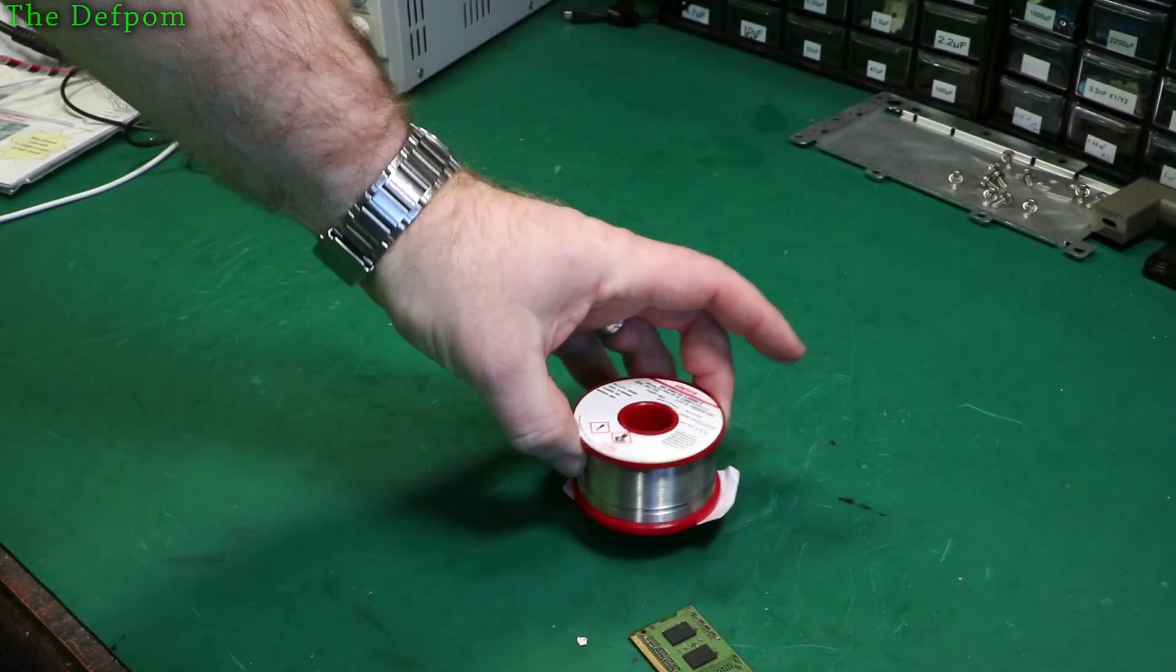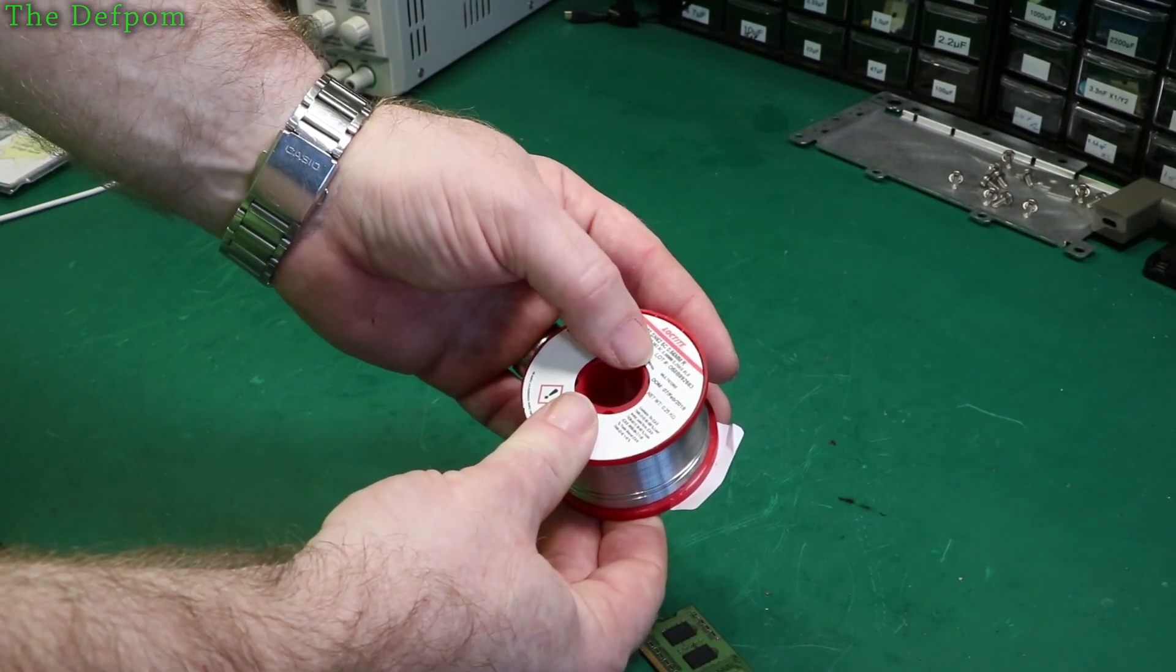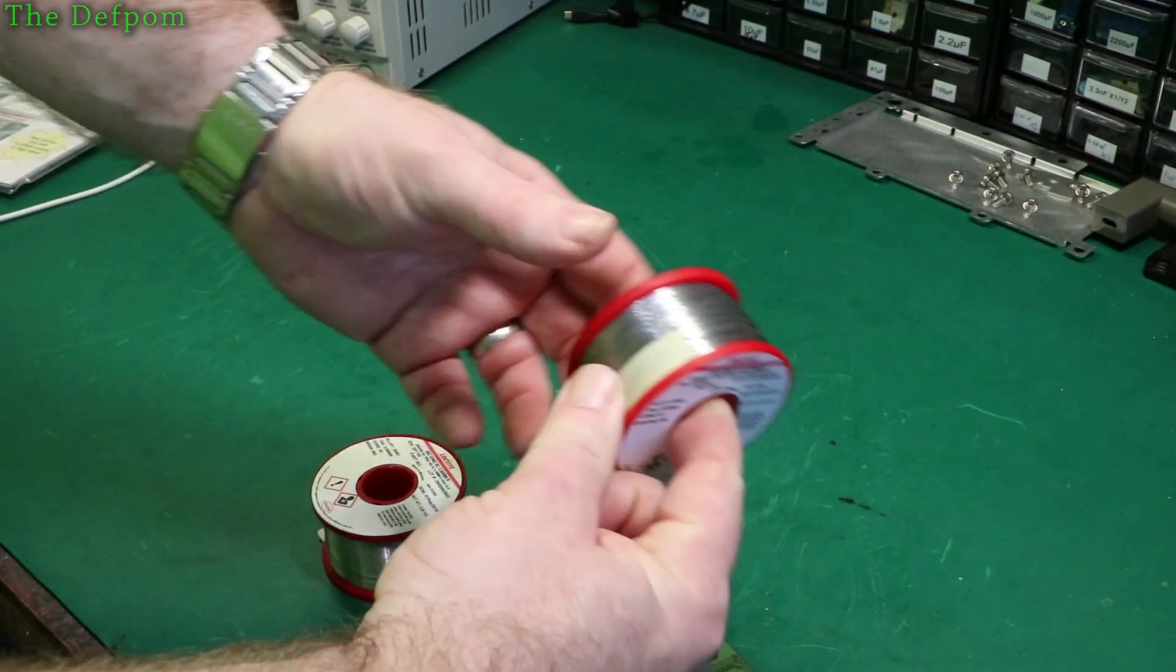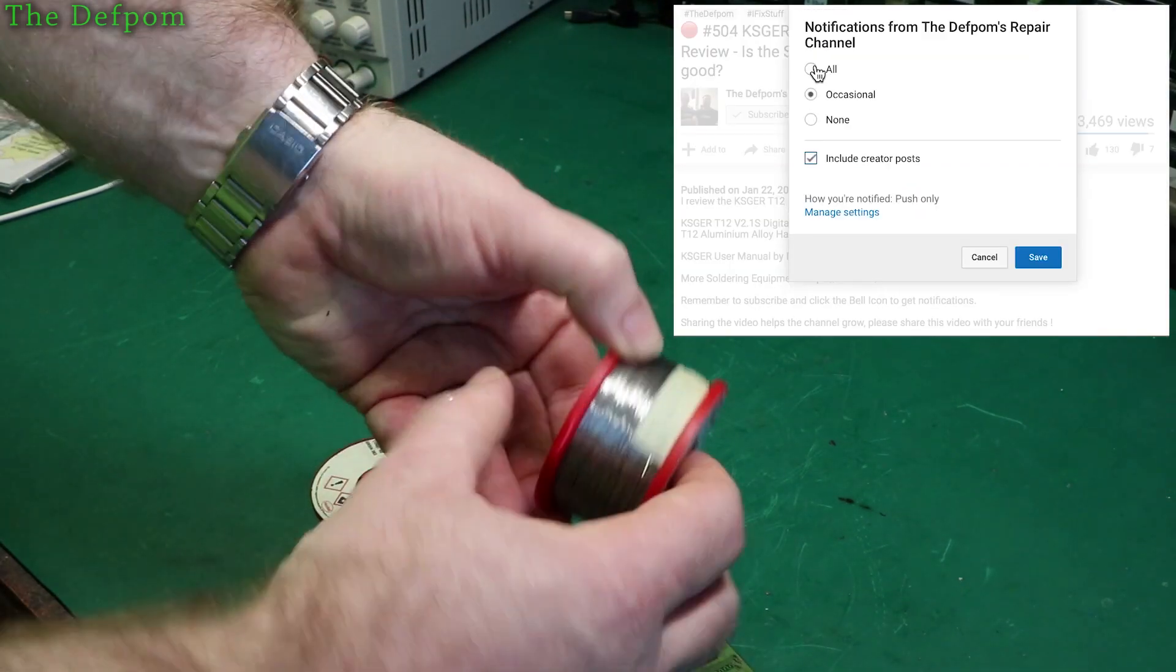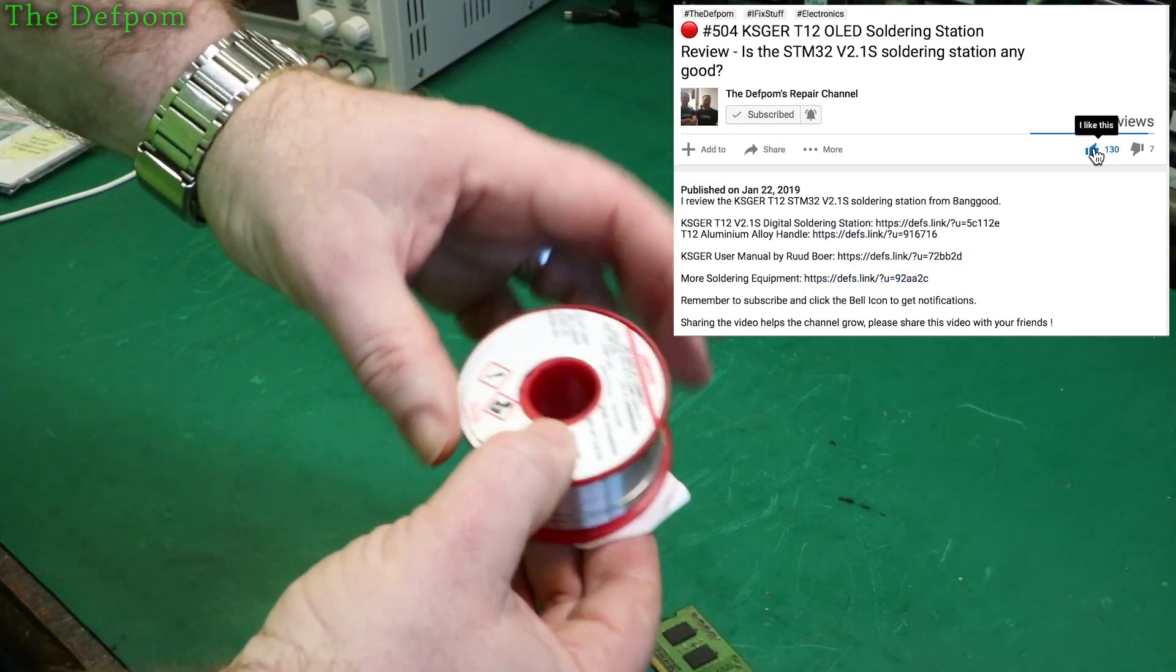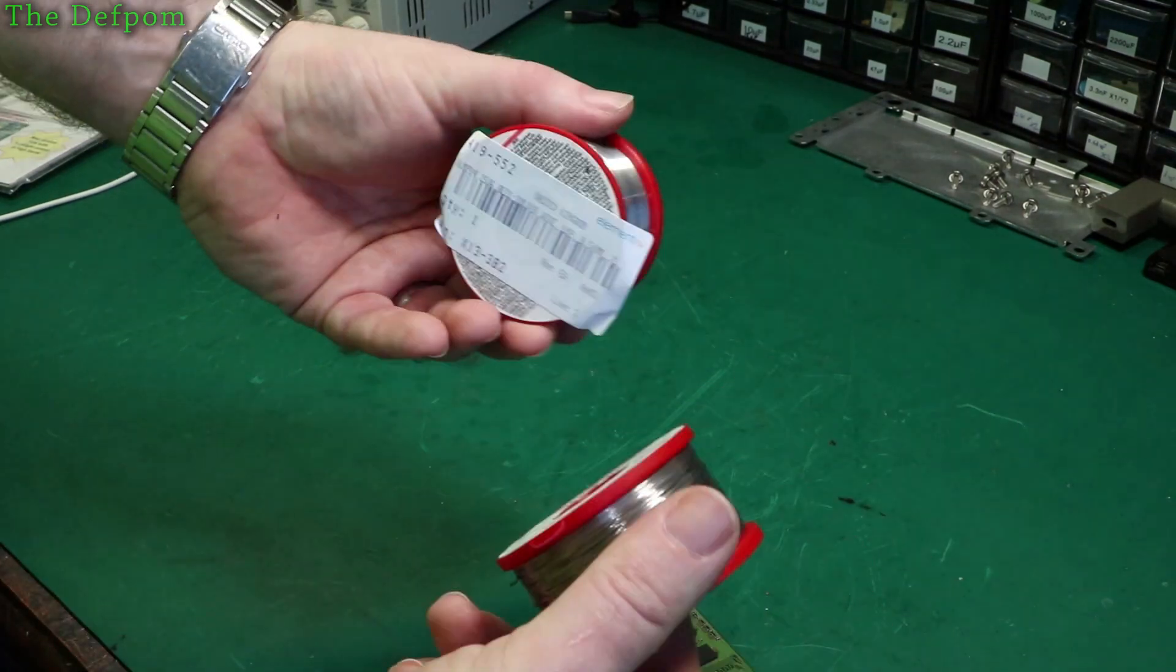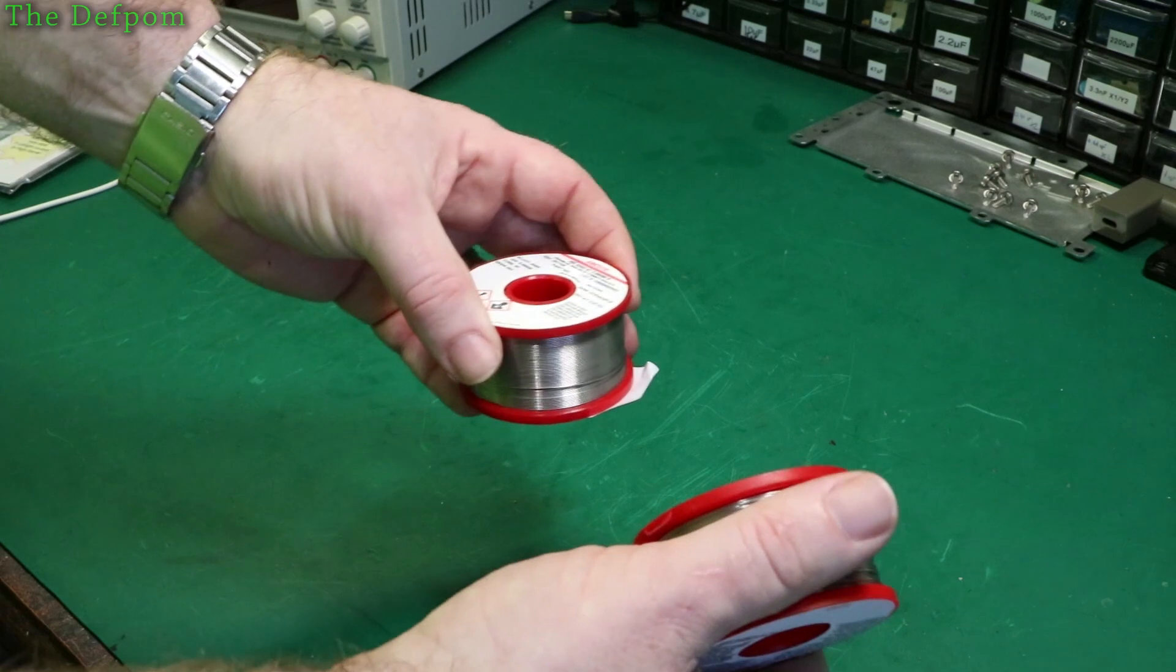Alright, we have some more solder. This is SN62 5C 0.56mm. So I've purchased some 0.4, was it 0.46, which is really fine. And this is 0.56, slightly thicker. The reason being this is cheaper than the 0.46.